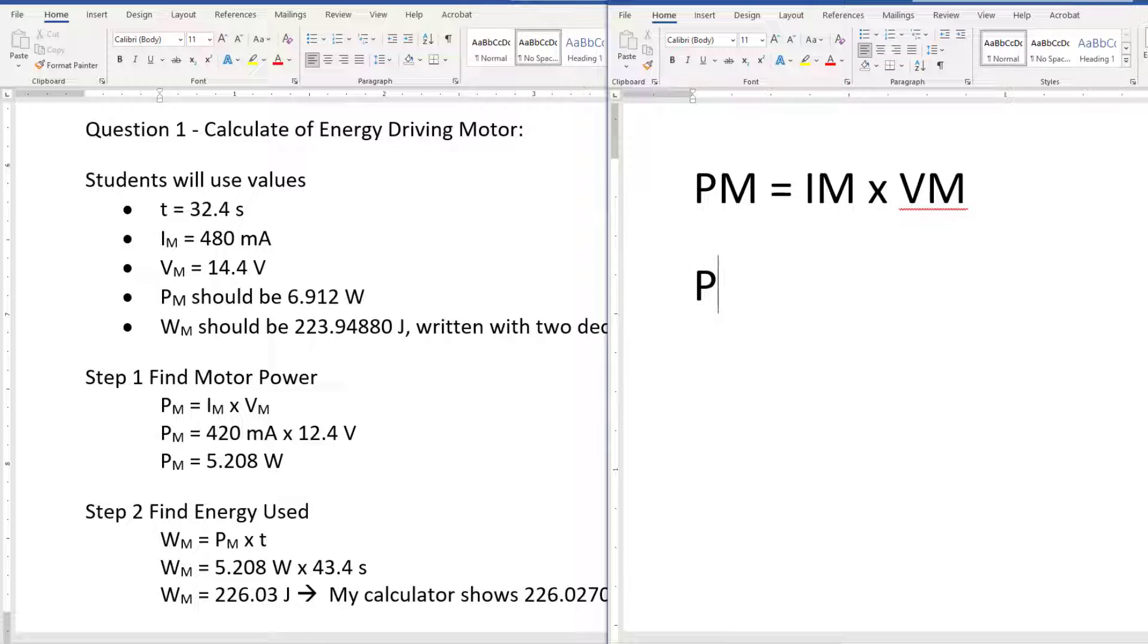I do that again, so the power of the motor equals, and then I'm going to put the value in. In this case it's going to be 420 milliamps times 12.4 seconds. Enter again, and now I'm going to say the power of the motor again equals. Now I'm going to type in 5.208 watts. Excellent.